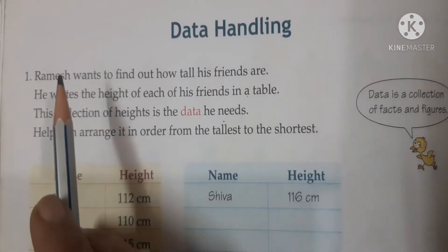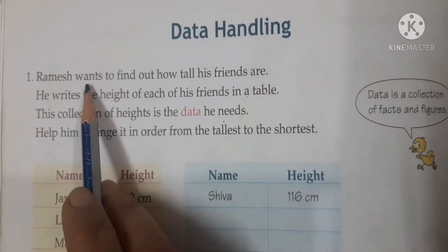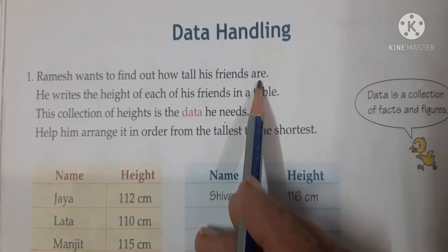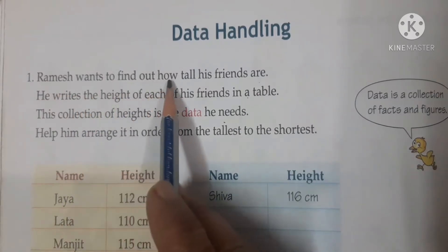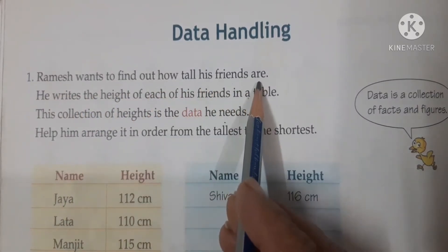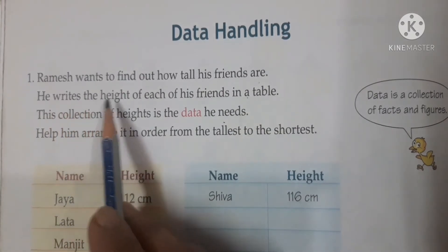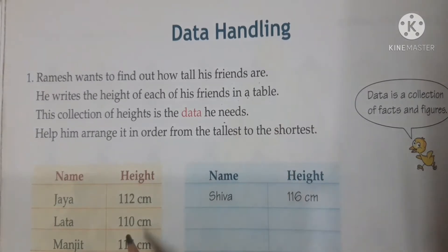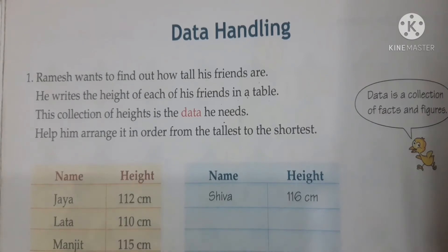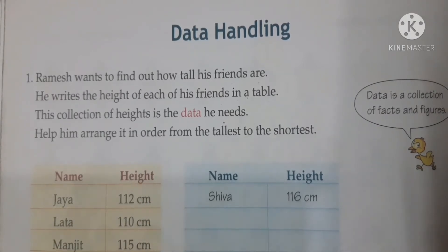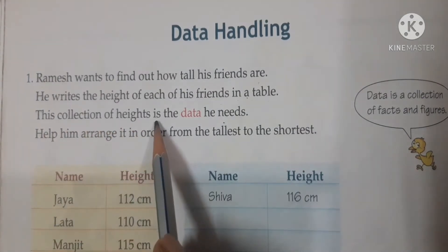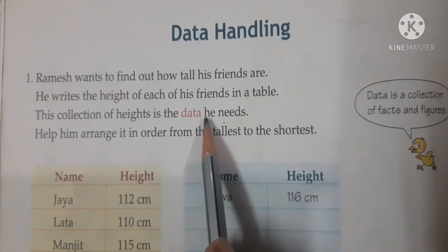Children, our first question is: Ramesh wants to find out how tall his friends are. He writes the height of each of his friends in a table — his friends' names and their heights. This collection of heights is the data he needs.